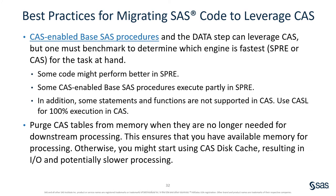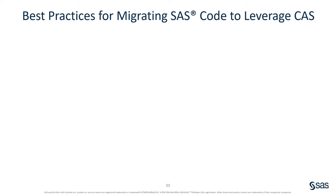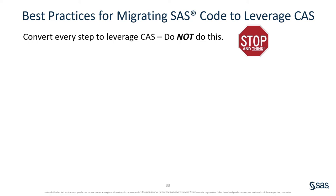Remember to purge CAS tables from memory when they are no longer needed for downstream processing. This is very important and ensures that you have available memory for processing; otherwise, you might start using CAS disk cache, resulting in I/O and potentially slower processing. Remember, it is not necessary to process all code in CAS to justify SAS Viya. You may think the best way to get started is to convert all of your code to leverage CAS — please do not do this. Be selective in identifying steps that can leverage CAS.